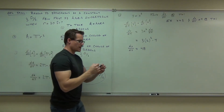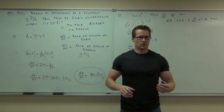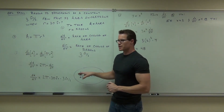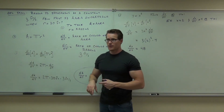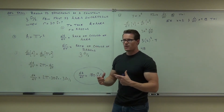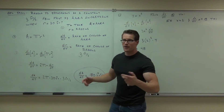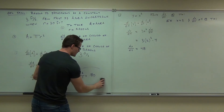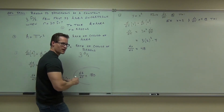What we've just found out is that for this specific oil spill, our area is increasing. When our radius is 30 feet, our area is increasing at 180 — unless I did that wrong. Well, I forgot my pi. That's important. That's a factor of 3.14159...